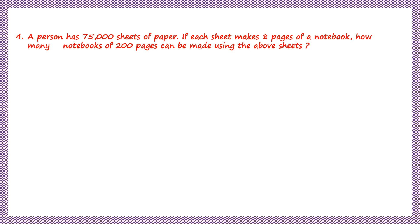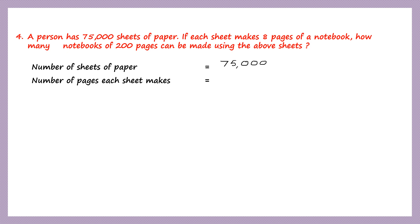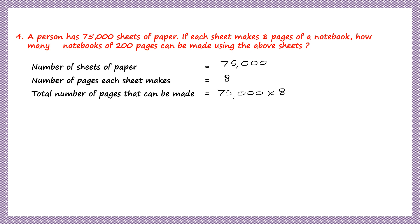Question 4. A person has 75,000 sheets of paper. Each sheet makes 8 pages of a notebook. How many notebooks of 200 pages can be made using the above sheets? Let's go carefully step by step. Number of sheets of paper is 75,000. Number of pages each sheet makes is 8. So total number of pages that can be made is 75,000 into 8. We need to find the total number of pages first.